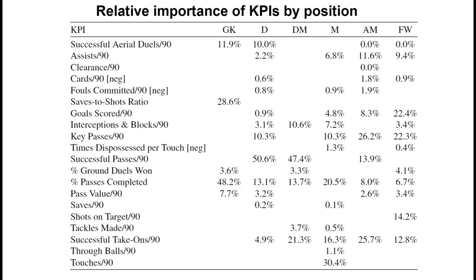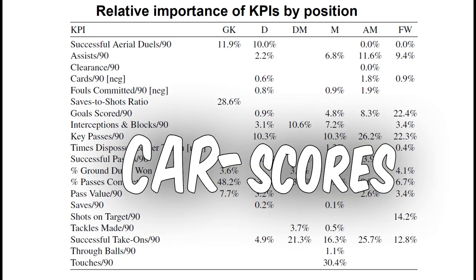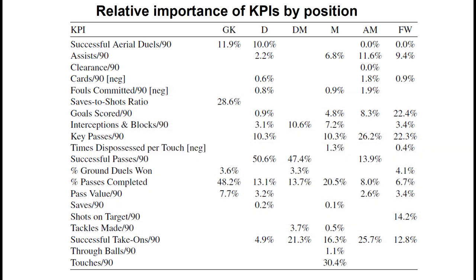Here we have the overall results presented in a way that is easier to interpret. This table shows CAR scores for each position, which is the percentage that each KPI contributes to the explained variance in plus-minus ratings. The higher the number, the more important the KPI is in explaining why different players get different plus-minus ratings. For example, for defenders, the number of successful passes per 90 minutes contributes to half of the explained variance — meaning this single KPI is as important as all the others combined.